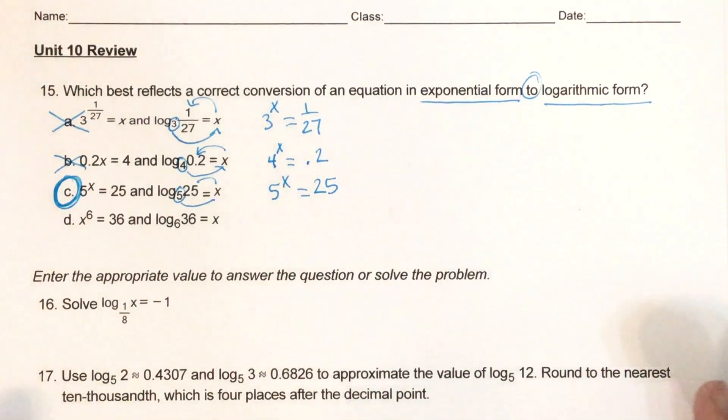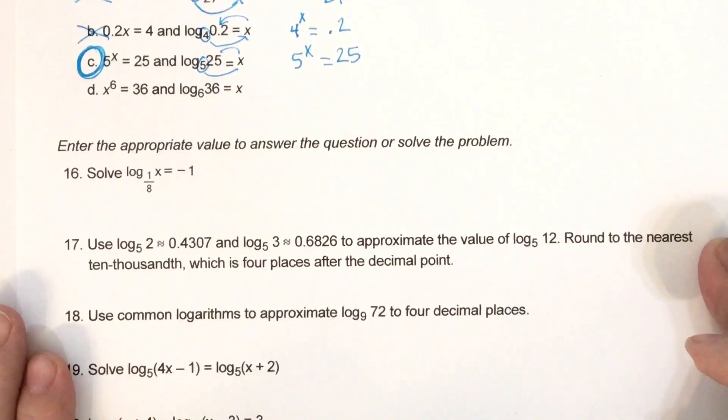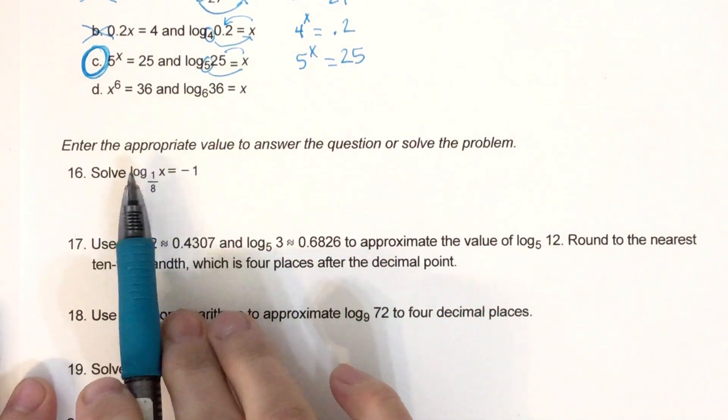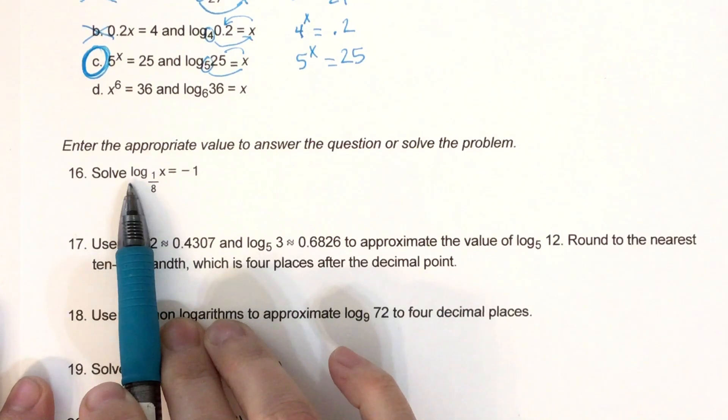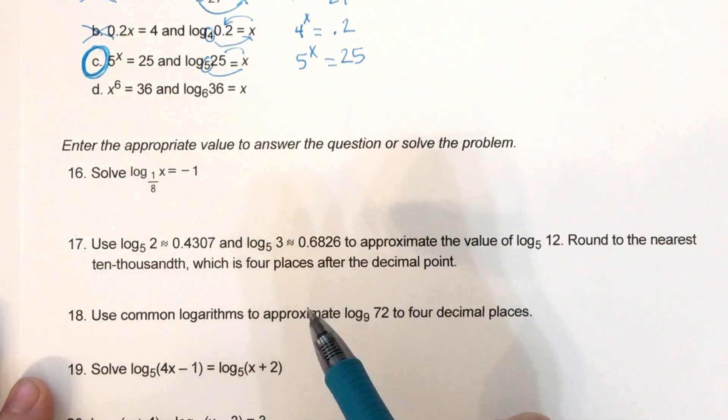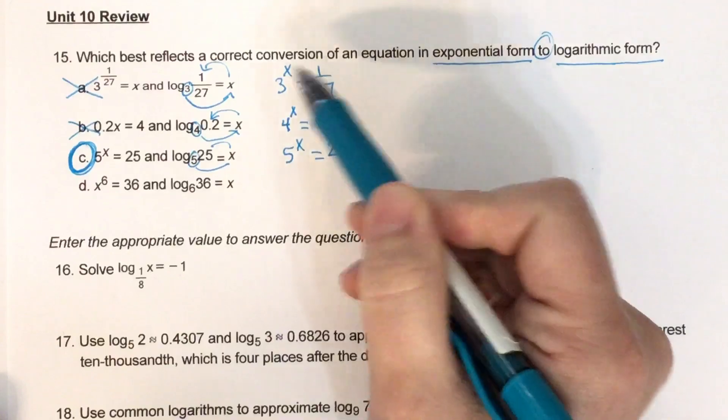Okay, number 16, we're solving. So if we only see log one time or natural log one time, then we rewrite it in exponential form like we were practicing up here.